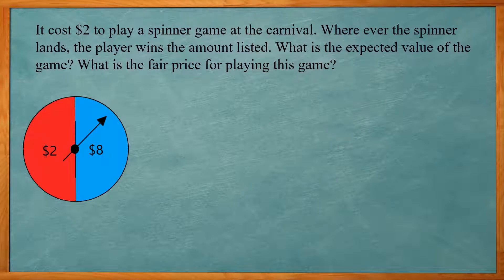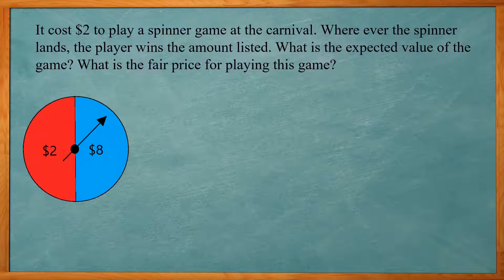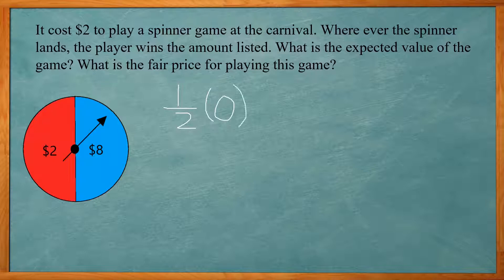This one says it costs $2 to play a spinner game at the carnival. Wherever the spinner lands, the player wins the amount listed. What is the expected value of this game, and what is the fair price for playing this game? The spinner will land in one of two spots: the $2 red section or the $8 blue section. The probability of landing in the red is 1 out of 2. If it costs $2 to play and I win $2 back, I'm netting 0 — my winnings of $2 minus my cost of $2 equals 0. Landing in the blue is also 1 out of 2, and I win $8 but paid $2, so I'm netting $6.